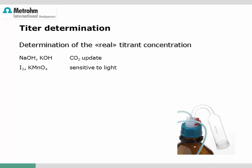What is the titer and how can it be determined? Usually a titrant solution is made by weighing a chemical substance into a volumetric flask and filling it up with solvent. The real concentration then has to be determined by titration using a primary standard. The main reason a titer determination is required is that concentration is not always stable. Alkaline titrants may absorb carbon dioxide, and others may face oxidation or reduction by light, causing the real concentration to decrease — this is called the aging of the titrant.